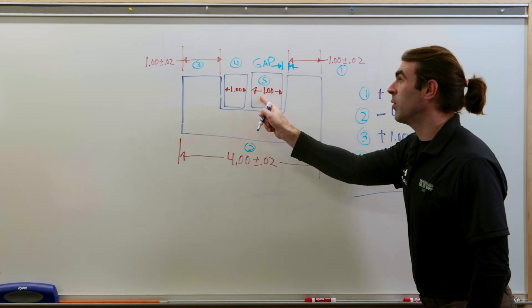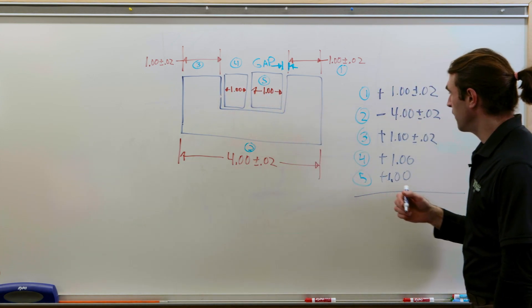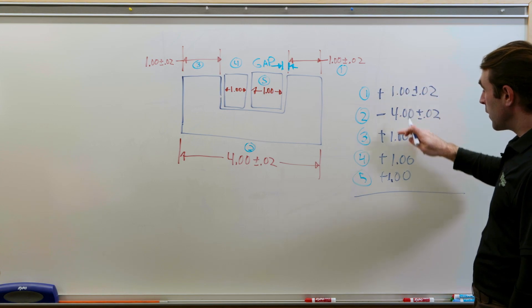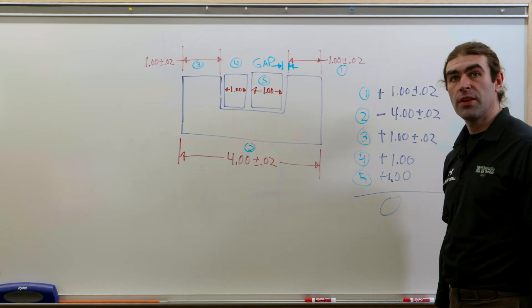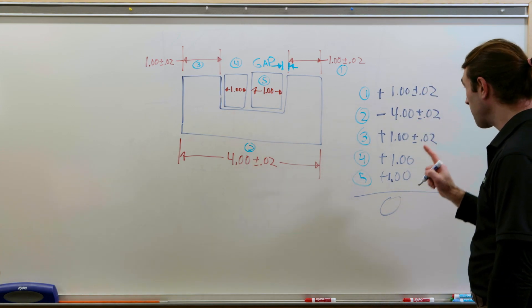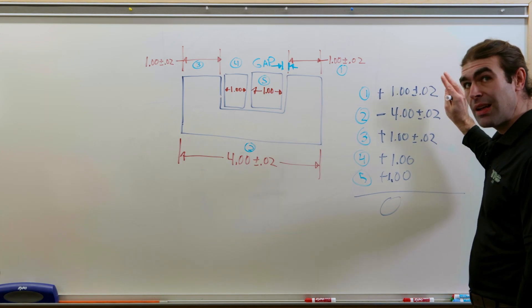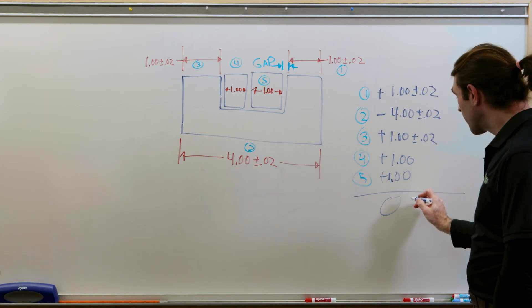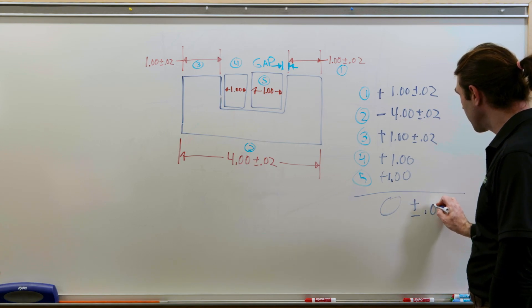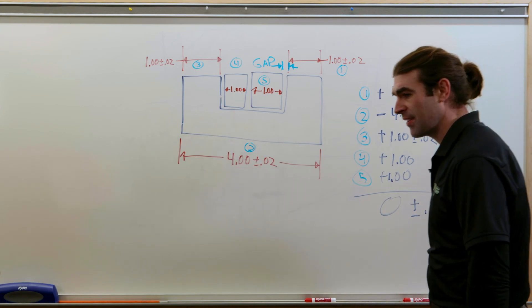We're going to add. And then we're going to add. We're going to go one, one to the right. They're both positive. So the arithmetic on this gives us zero. But, and this is important, the tolerances always add. So it's going to be zero plus or minus 60 thousandths.